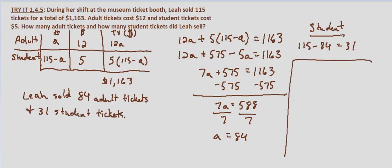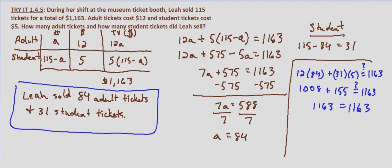So to check this, we're going to substitute the amounts times the numbers. So 12 times 84, $12 a ticket times 84 adult tickets, plus 31 times 5, 31 student tickets times 5 dollars each. Does that equal 1163? So 12 times 84 is 1008, and 31 times 5 is 155. And 1008 plus 155 does equal 1163. So our solution checks. And we know that Leah sold 84 adult tickets and 31 student tickets.